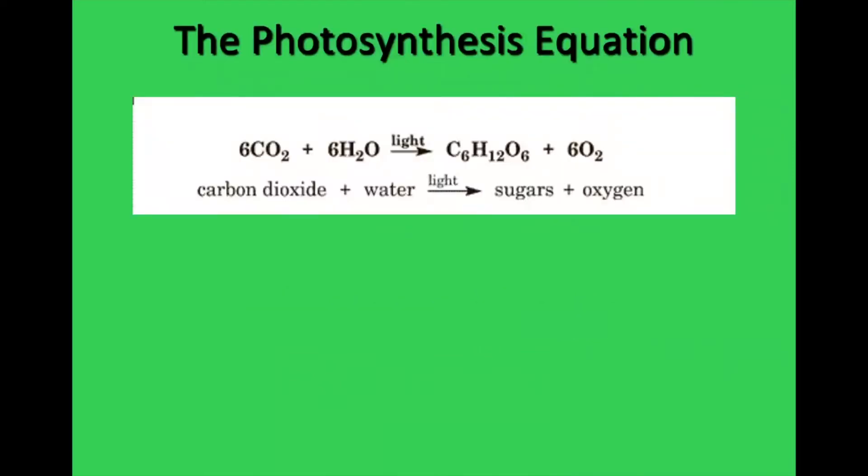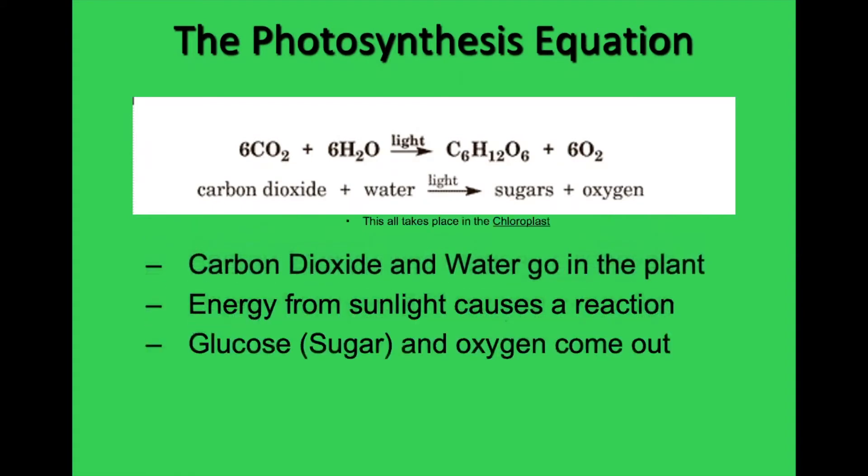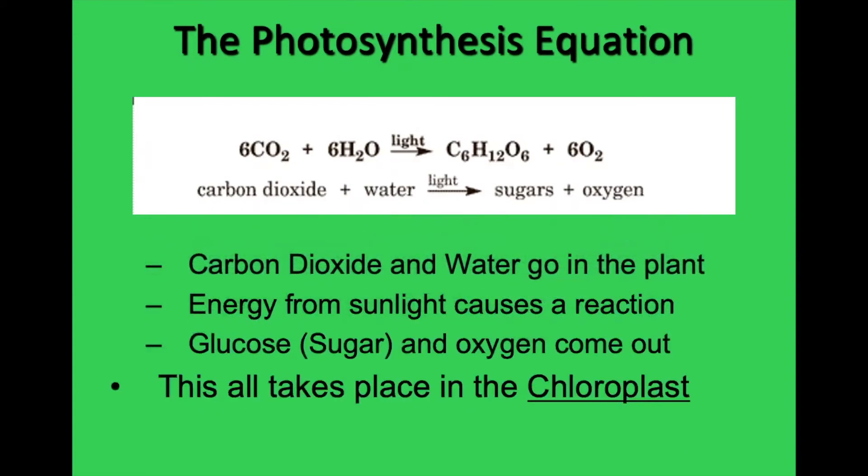Photosynthesis is a chemical reaction, and many of you probably are currently in chemistry or have already taken chemistry, so you will recognize that chemical reactions come with an equation. This side are the molecules going into the chemical reaction, the substrates, and then this arrow represents the actual reaction taking place, and then this side are the chemicals coming out of the reaction, the products. So what goes in? What comes out? Let's look at what goes in.